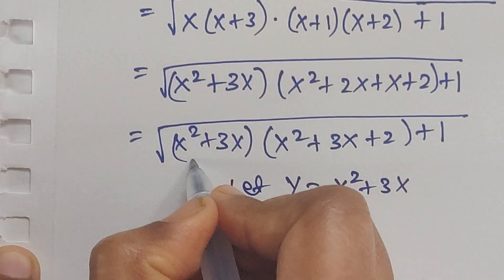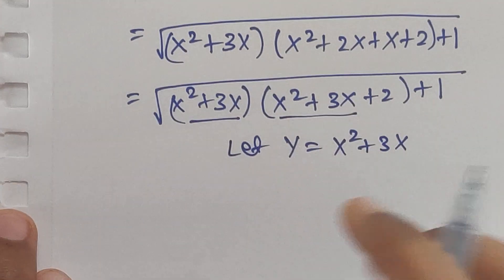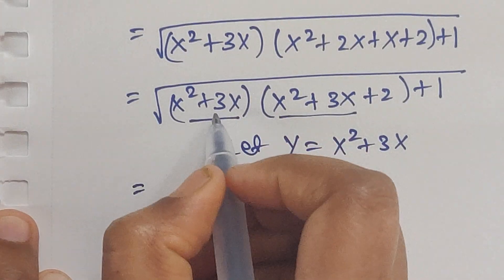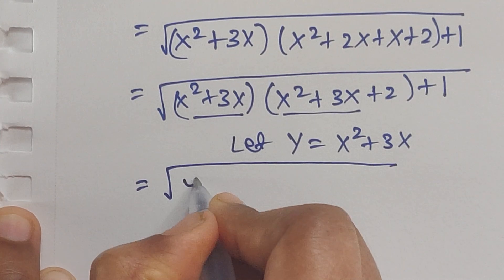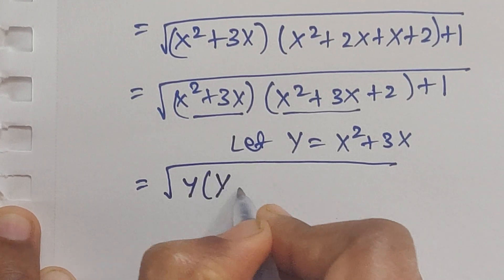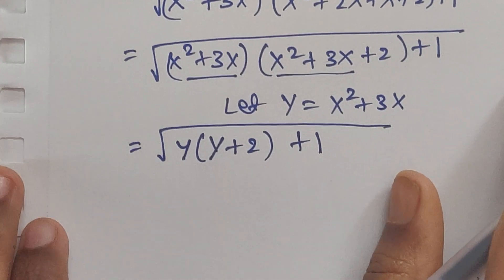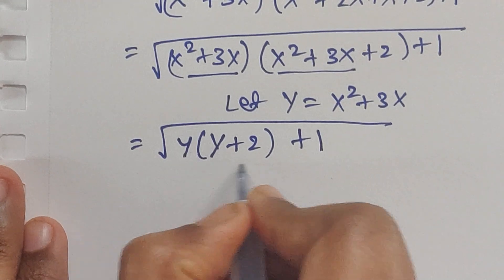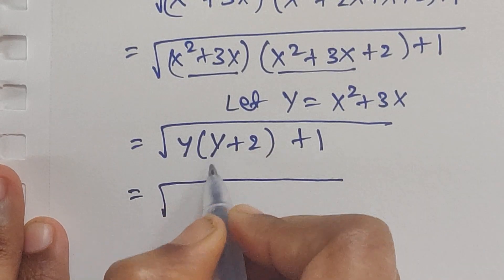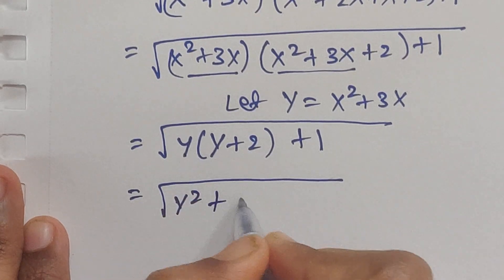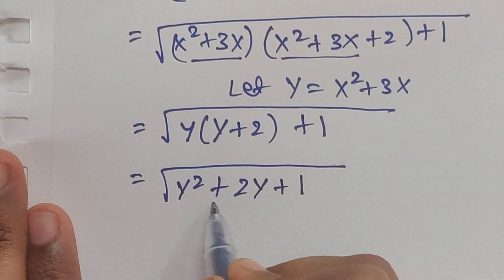In place of x² plus 3x we write y. So we have square root of y times (y plus 2) plus 1. Multiplying these two terms gives square root of y² plus 2y plus 1.